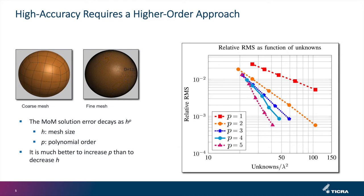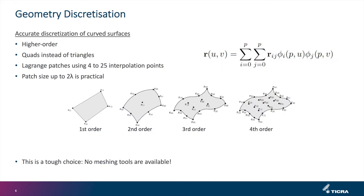In practical problems we often encounter curvature, implying we also need high order patches. We prefer quads instead of triangles because they usually lead to the lowest number of unknowns. We use Lagrange patches with between 4 and 25 interpolation points — for a 4th order patch we need 25 interpolation points. The patch size can be up to 2 by 2 wavelengths, but there are really no meshing tools available that can do such high order patches.